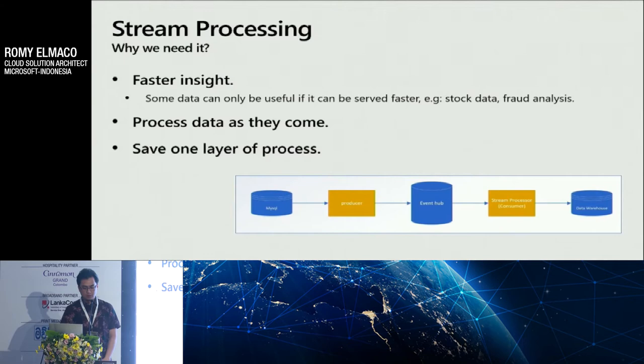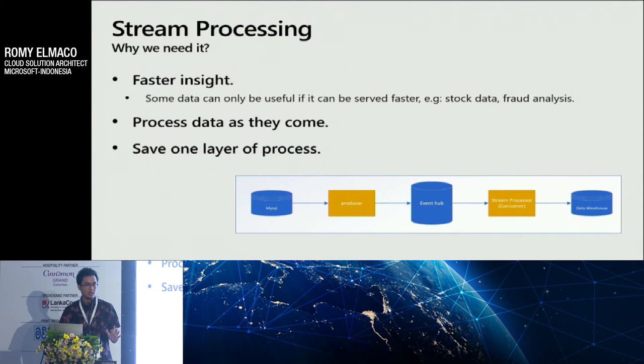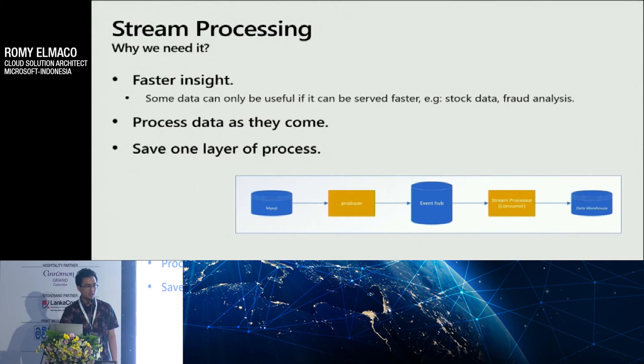Stream processing also processes data as it comes. It's different from the previous batch processing approach because for batch processing, we need to throw data into the data lake, which means we need storage for it. After we throw it into the data lake, we trigger a certain job — usually an ETL job, triggering a Spark job — fetching from the data lake and inserting it into the data warehouse. So it needs storage and processing power. If we use stream processing, we save one layer of the process.